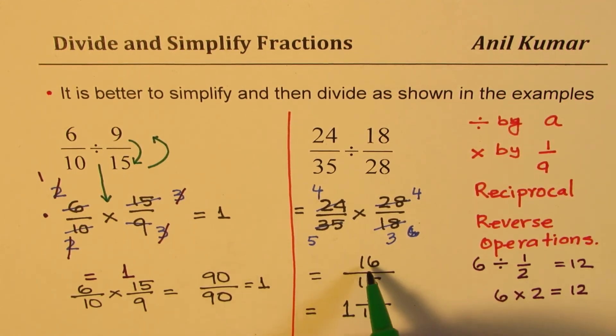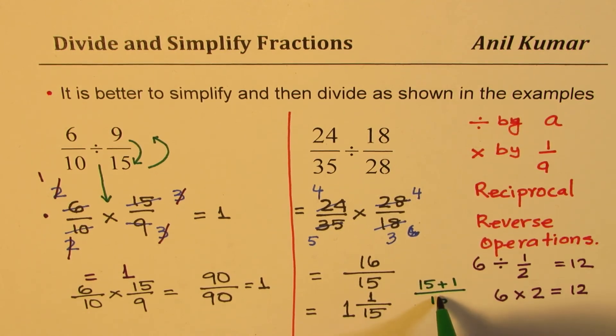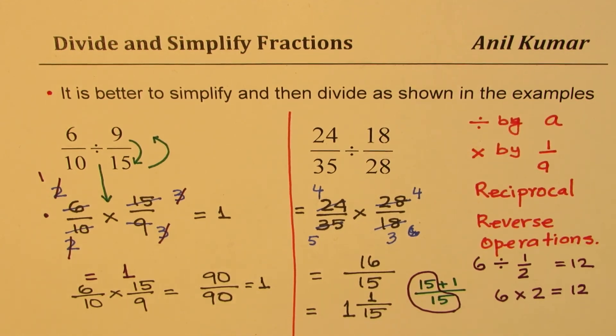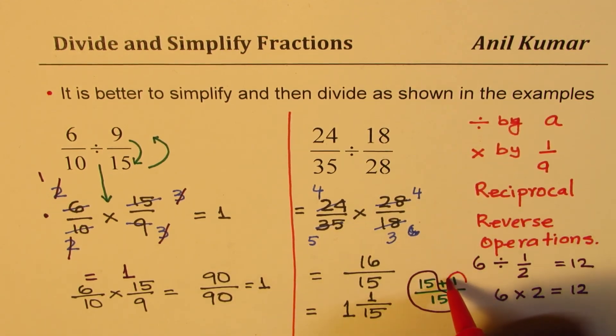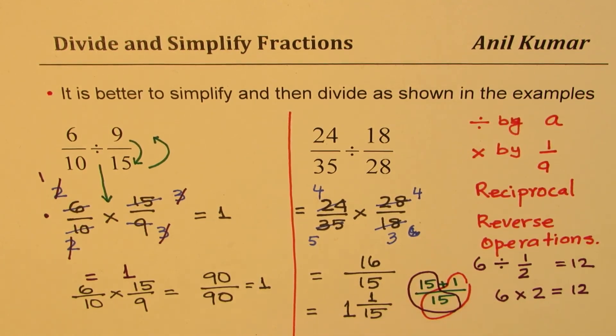So you could think like this: 16 could be written as 15 plus 1 divided by 15. Do you see that? So this portion, 15 over 15, is 1 whole, and the other portion which is left, which you add to it, 1 over 15, is the other part. So we get a mixed number as shown, right?